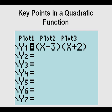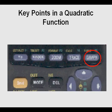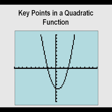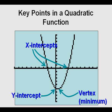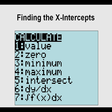Let's look at this function. We're going to graph it by going to y= and entering the two binomials multiplied together. These are what we call factors of a quadratic function. When we graph them, we get the parabola and can see the key points — the x-intercepts, the y-intercept, and the vertex.